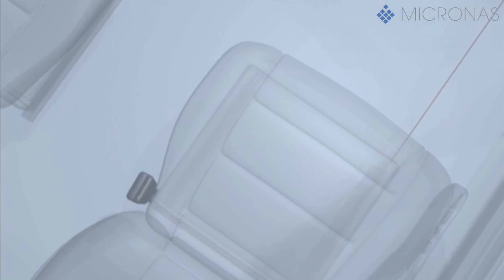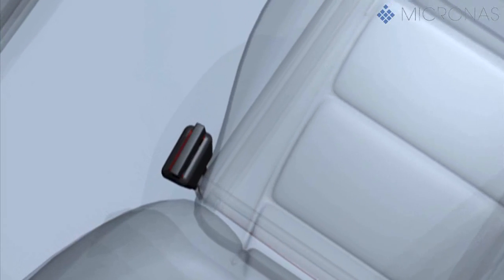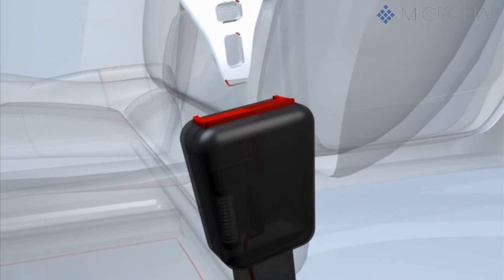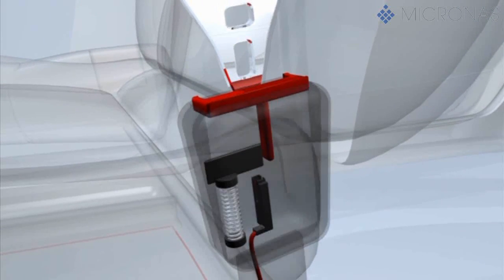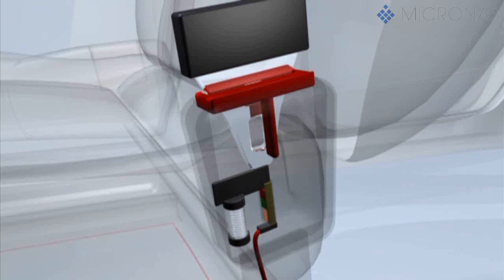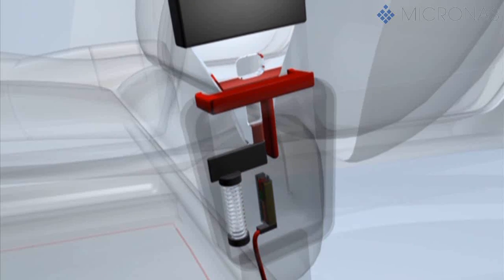A seat belt lock sensor application may be realized as follows. When the seat belt is applied, the lug of the belt is pushed into the belt lock. The lug moves a spring-loaded plastic element which in turn moves a magnet.